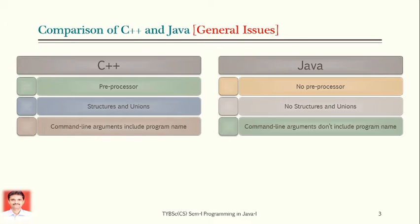The second point is about structures and unions. In C++, structures and unions are used to group data items that may not all be of the same type. But in Java, this structures and unions concept is totally removed because a collection of data items of different types can be added into a class itself, since a class also contains a collection of variables of different types.